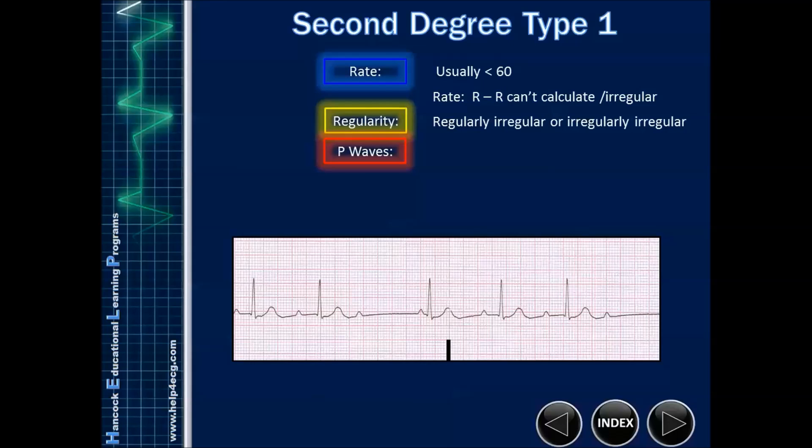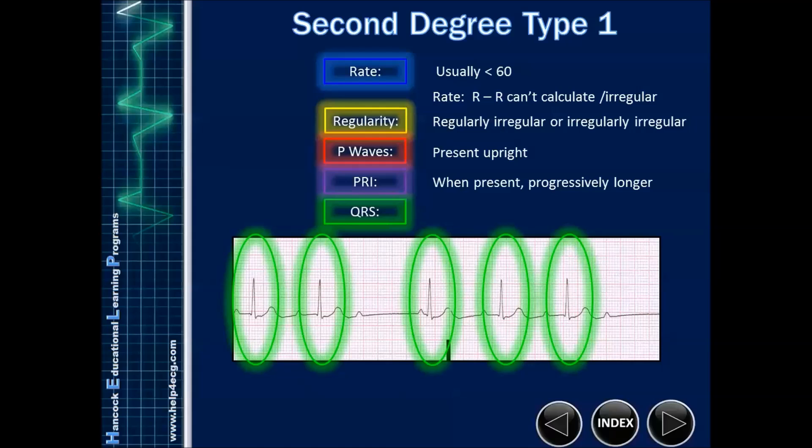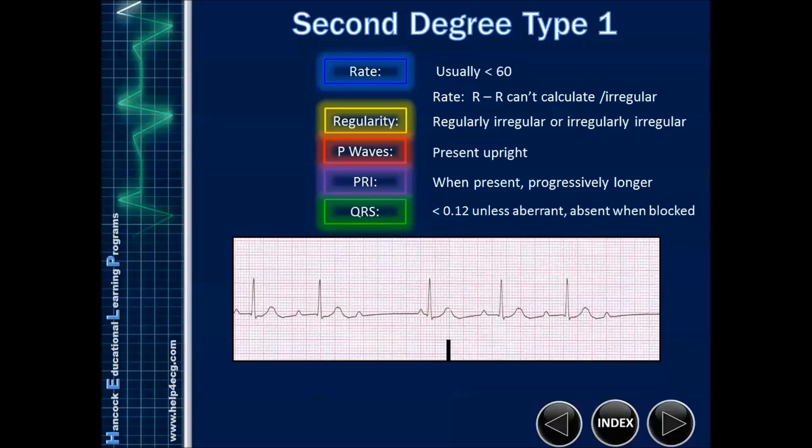Regularity, it depends. It can be regularly irregular if it's a standard conduction, or it can be irregularly irregular. In the case of P waves, they should be present, and when there's a PR interval, we expect to see it increasing throughout the block. And then we drop and we have no PR interval where there's no QRS. QRSs, as long as there's no underlying aberrant bundle branch block, will be narrow in this case. Which is important in differentiating, for example, third-degree heart block, where they will be wide and aberrant.